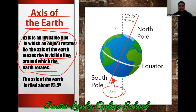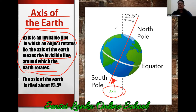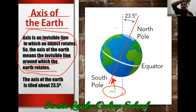Around this axis the earth is rotating. For example, if we think this is the axis, the earth is moving around it, rotating around it. Do you understand now?